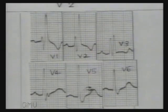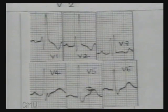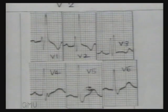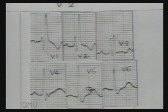In this ECG, measure the width of the QRS complex in lead V1 — it is 3 small squares. Note the RSR' pattern in V1 and V2. Note that the T-wave is opposite to the direction of the wide terminal QRS deflection. In V5 and V6, a wide S-wave is seen. So the diagnosis is right bundle branch block.